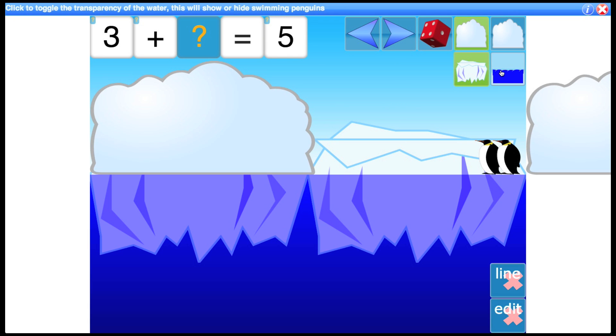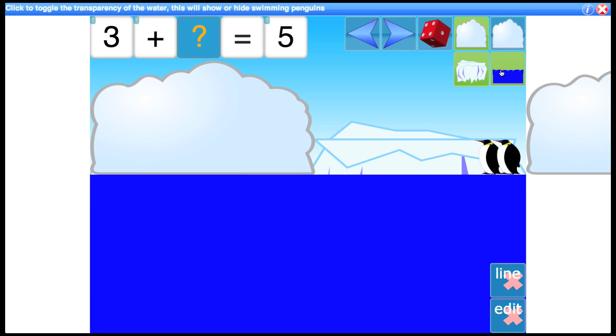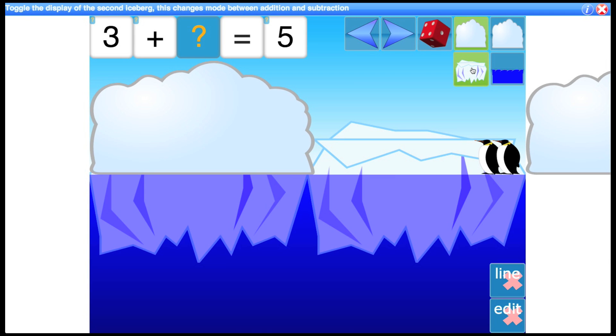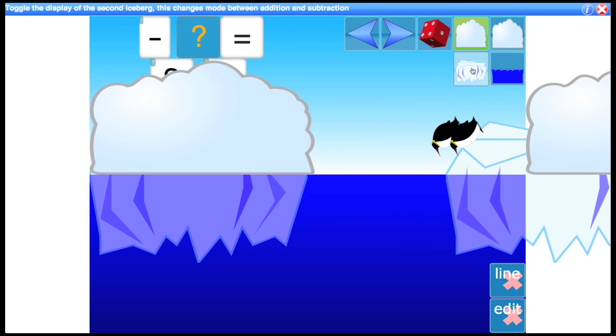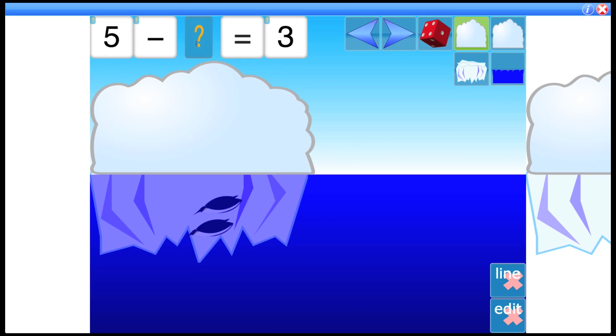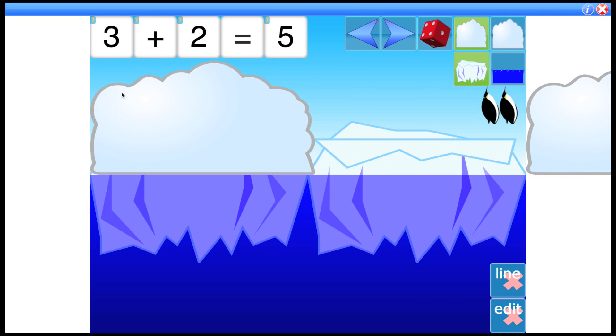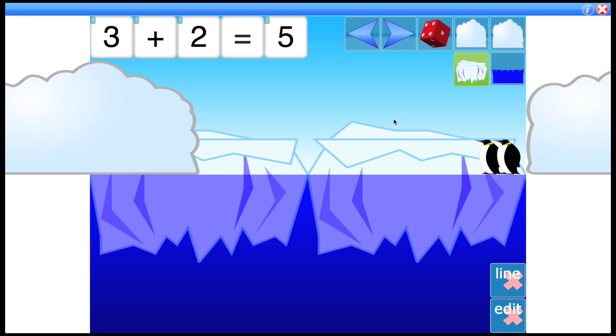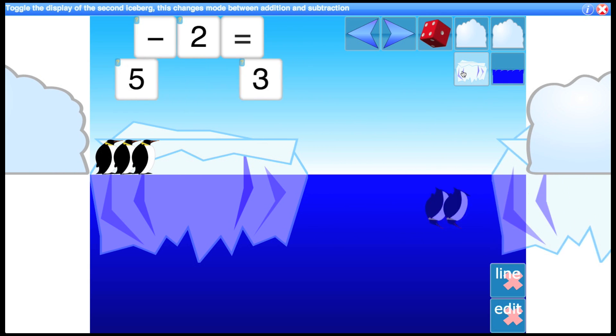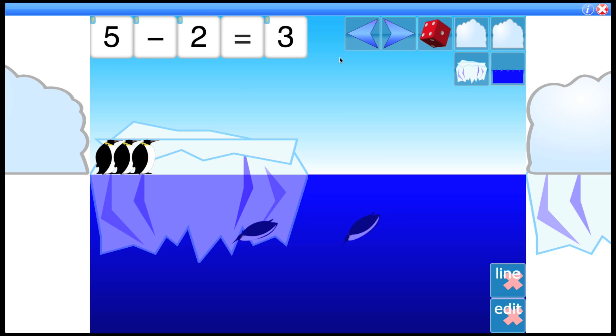So what else have we got? You can also hide the water by clicking this control, but we'll get to that in a moment. This next one is the iceberg, and when I remove it, the penguins jump into the water and you'll notice that these cards flip over. Let's just do that again. And you can see what was an addition fact changes to a subtraction fact.